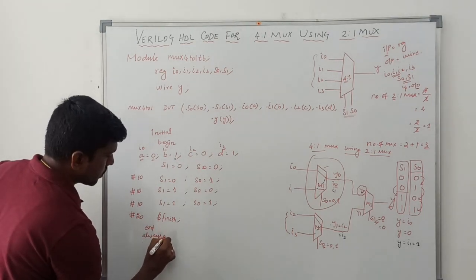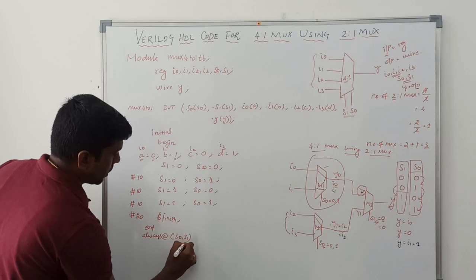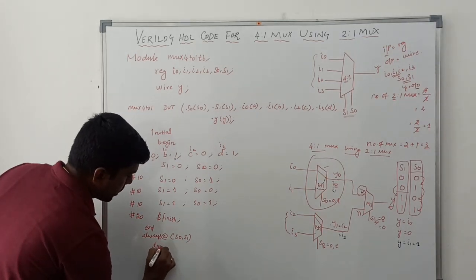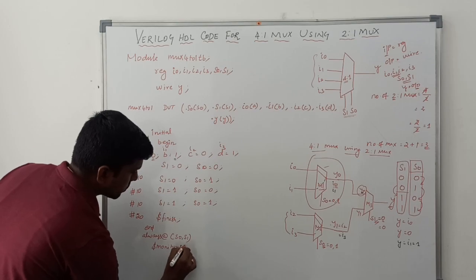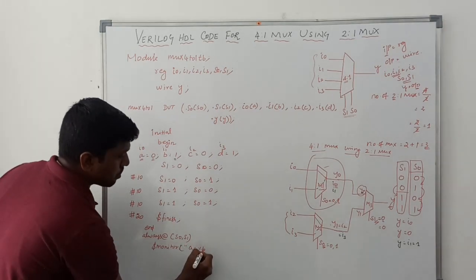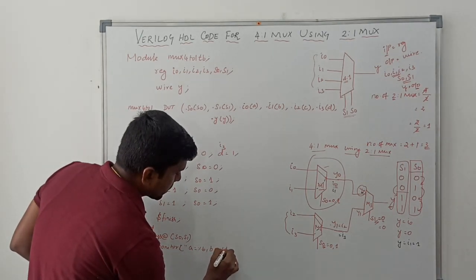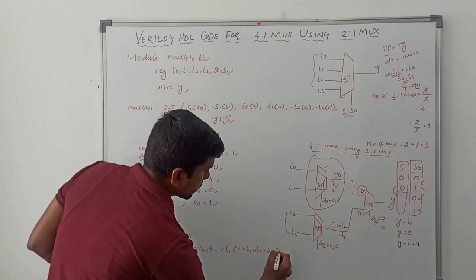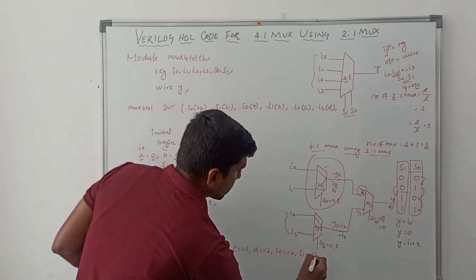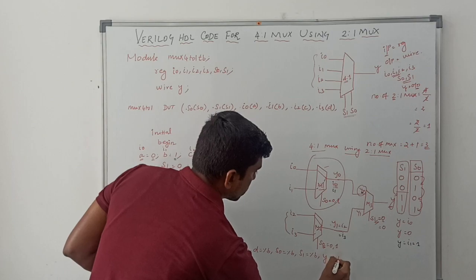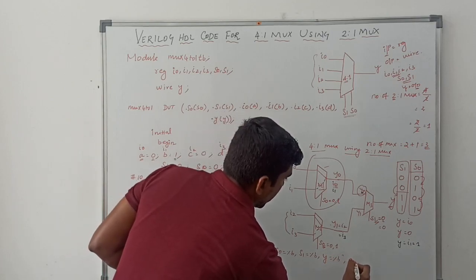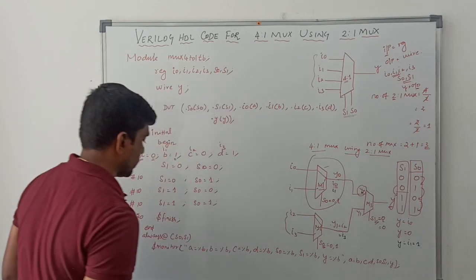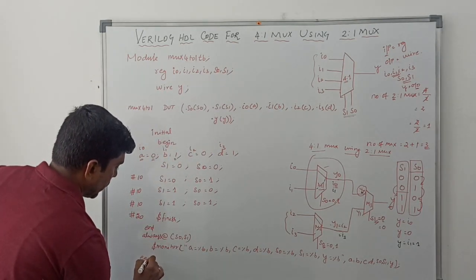Then use always @(s0, s1) — based on the selection line changes, the output may change. Use $monitor to display the output. The monitor statement displays s0, s1, and y as binary values. Then write end module to complete the testbench.